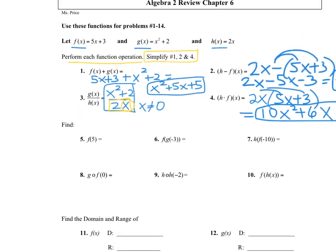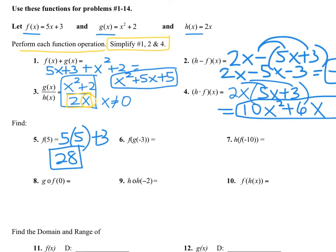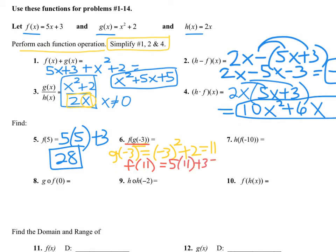For number five, you have to plug in. We're going to evaluate f of 5, which means plug 5 into function f. So we have 5 times 5 plus 3, and we get 28. Number six, we have to do the inside part first. I need to evaluate g of negative 3 — plug negative 3 into function g, square it and add 2, so I get 11. That is not my answer. Then I plug into function f: 5 times 11 plus 3 gives the answer 58.